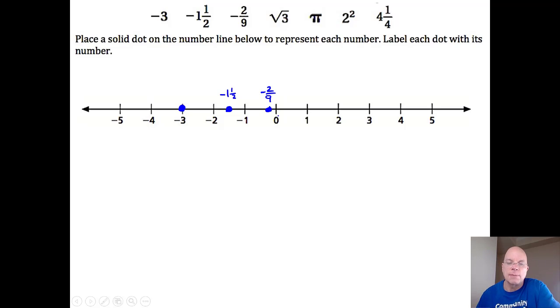We're putting a solid dot to represent each number because that's how you graph a location on a number line. That'll be important for what we're about to do. Square root of three we agreed was around one-point-seven, so I'm going to put a solid dot there. Pi we know is around three-point-one-four. Two-squared is four. And four-and-a-fourth would be very close.